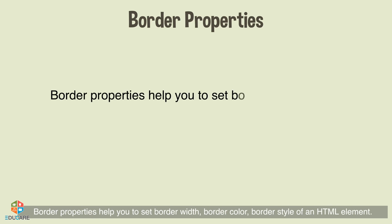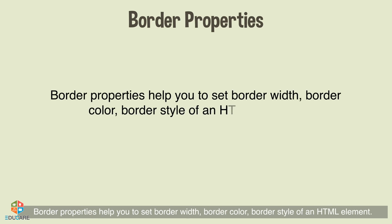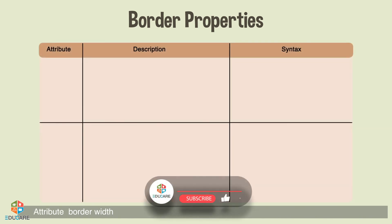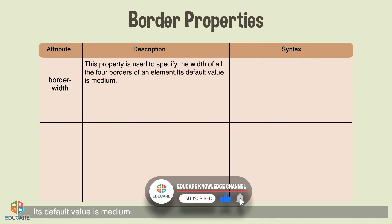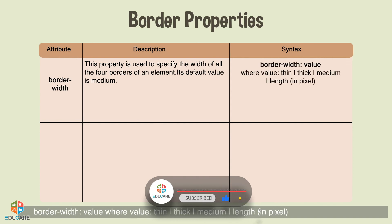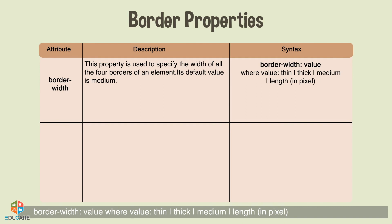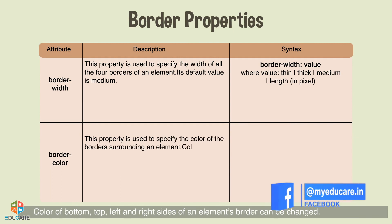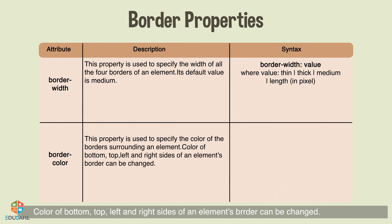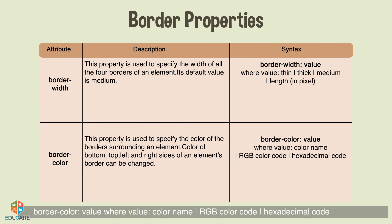Border Properties: Border properties help you set the border width, border color, and border style of an HTML element. The border-width property specifies the width of all four borders of an element; its default value is medium, and values can be thin, thick, medium, or a length in pixels. The border-color property specifies the color of the borders surrounding an element; the color of the bottom, top, left, and right sides can be changed individually. Its value can be a color name, RGB color code, or hexadecimal code.